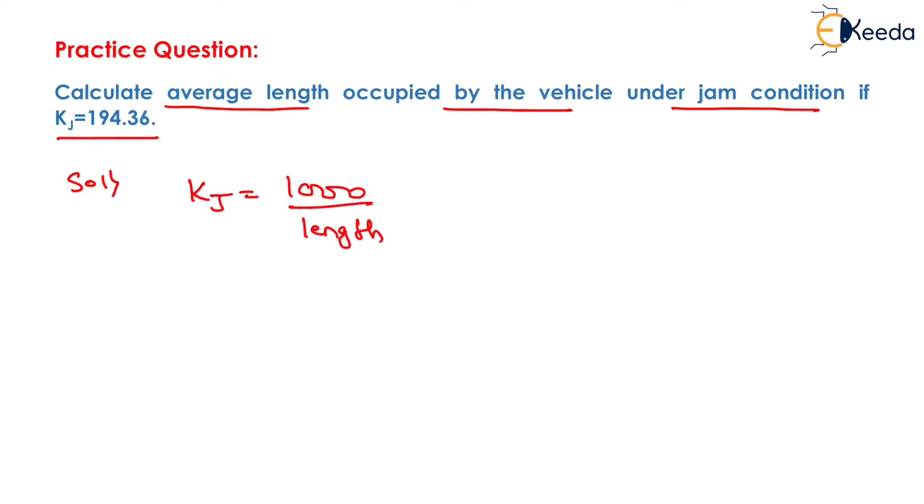So, average length of vehicle will be equals to 1000 upon KJ.